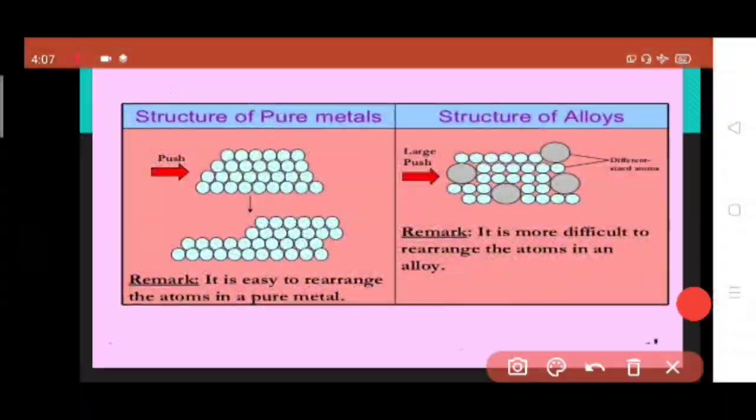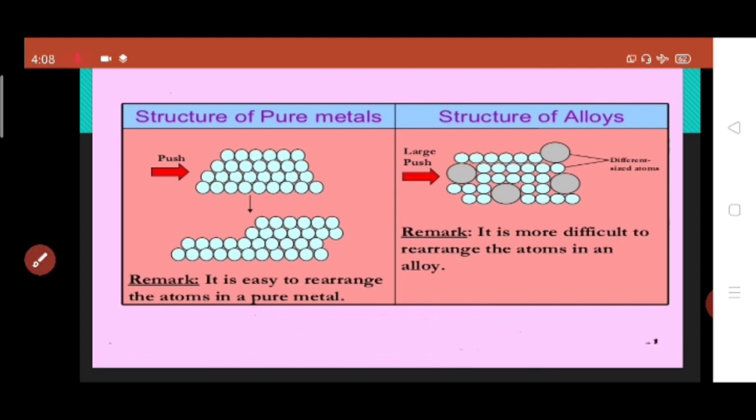In the structure of metal, we can see all the atoms are of same size, and it's easy to rearrange the atoms if required in a pure metal. But in alloys, due to the difference of different sized particles, it's more difficult to rearrange them, and hence the properties of alloys are usually different from its elements.